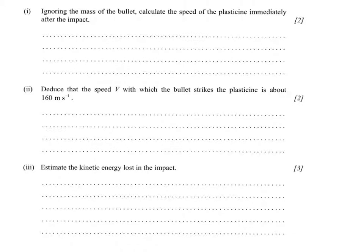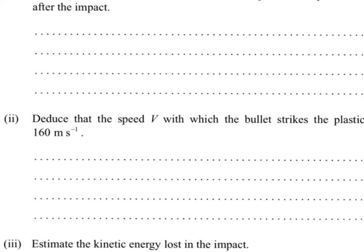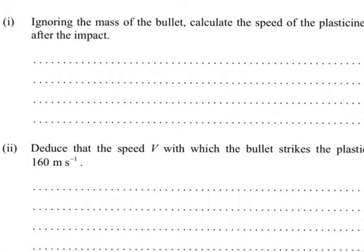It says, ignoring the mass of the bullet, calculate the speed of the plasticine immediately after the impact. So for this problem, we're going to use the equation V, which is velocity, equals the square root of 2gh. And this is derived by setting kinetic energy equal to potential energy and solving for velocity.